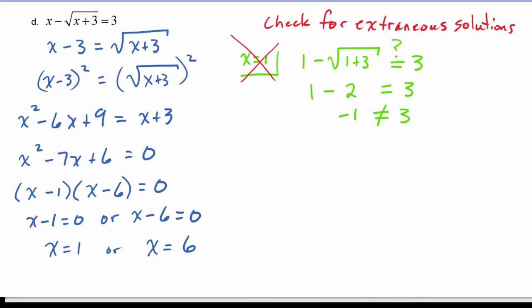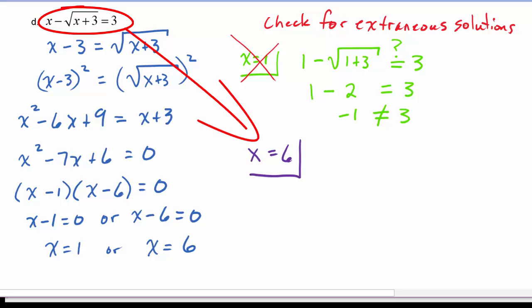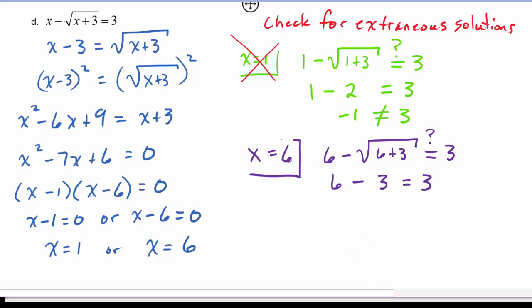Now let's go ahead and check x equals 6 into the original equation. So we have 6 minus the square root of 6 plus 3, and we're asking ourselves if that is equal to 3. So we have 6 minus the square root of 9, and the square root of 9 is 3, and yes that does equal 3. So this equation has only one solution, and that solution is 6.